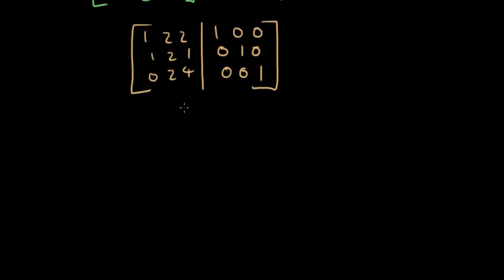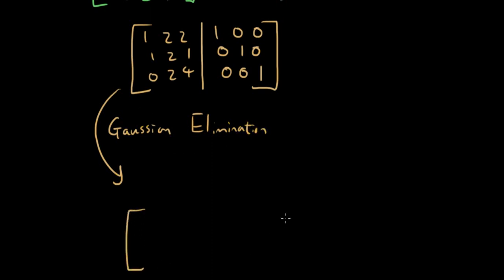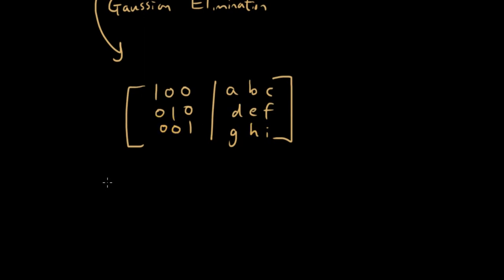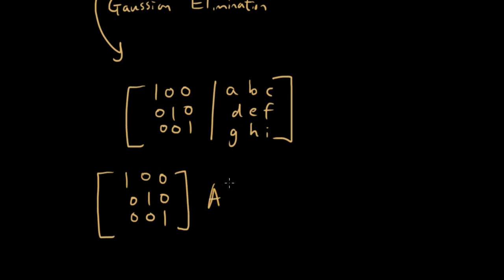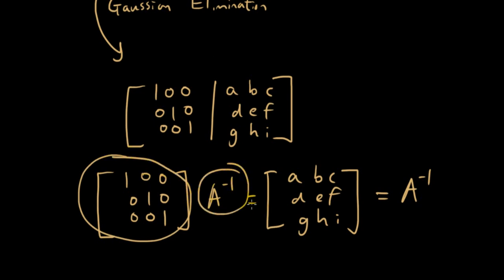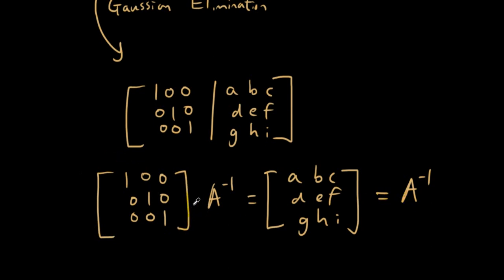We want to do Gaussian Elimination to simplify the whole process. We use Gaussian Elimination so we end up with the left-hand side equal to the identity matrix, and the right-hand side equal to some unknown matrix. If we rewrite this into the original form, the left-hand side multiplied by the inverse equals the right-hand side — which means the right-hand side is going to be equal to the inverse, because the identity matrix multiplied by the inverse just equals the inverse.